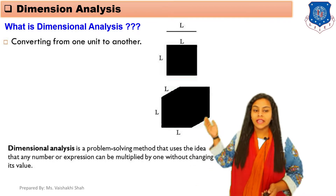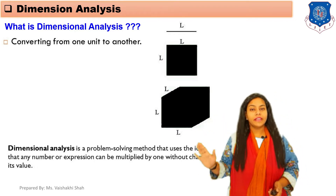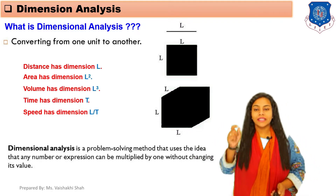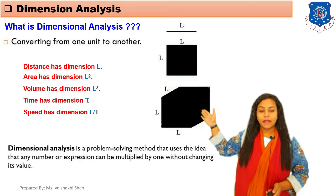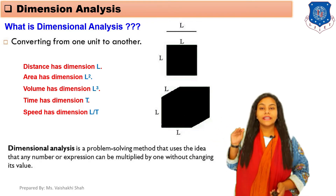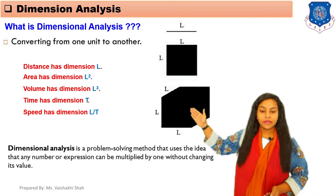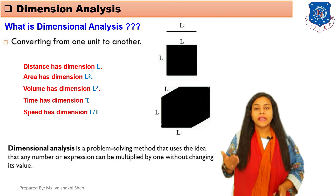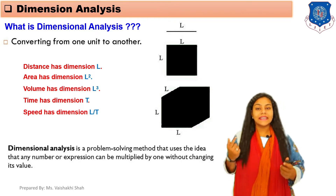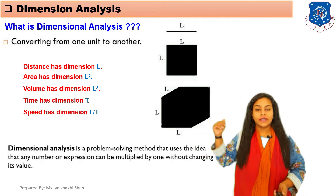For dimensional analysis, here you can see there is a 3D cube. Length, width and height we indicate as L. For this cube, distance has dimension L, area has dimension L squared, and volume is L cubed. We indicate time mostly by the unit second, with indication T. Speed has dimension meter per second, indicated as L by T.